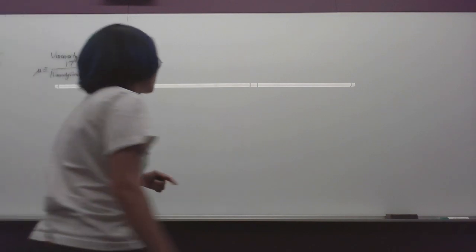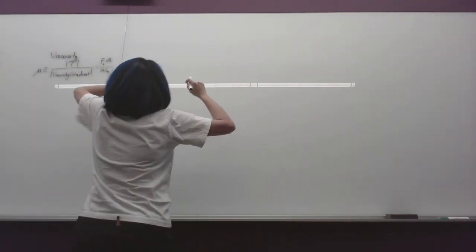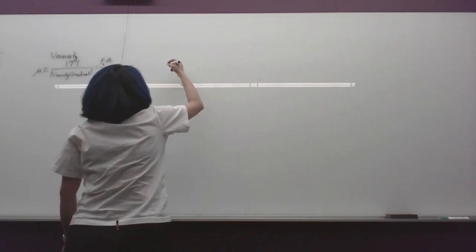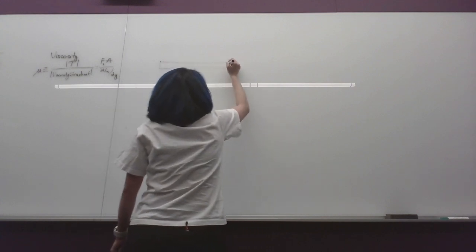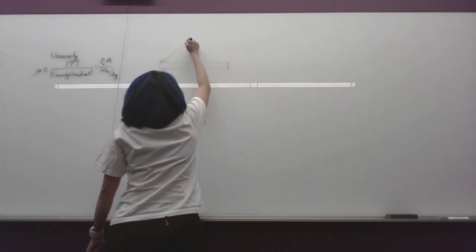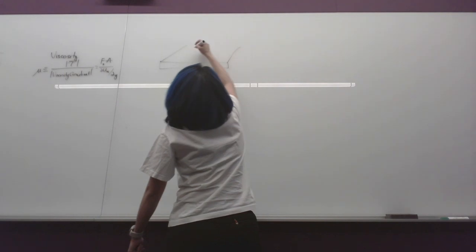So, the problem we need to solve today is a Couette flow problem. We have a pan, a square pan of oil. This is a square pan of oil.